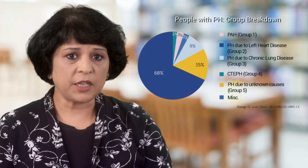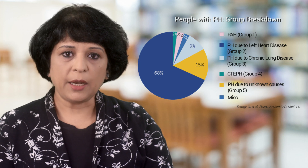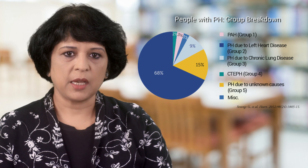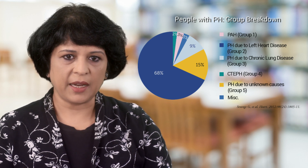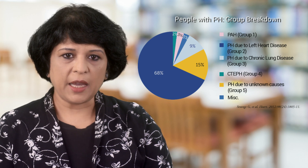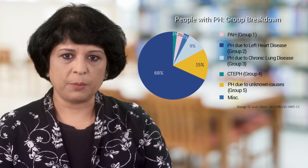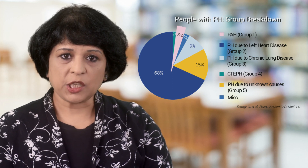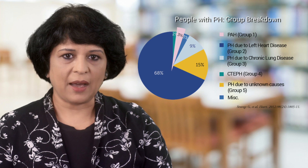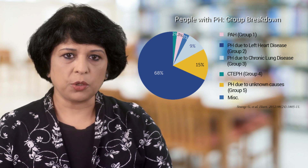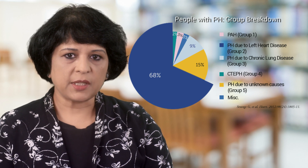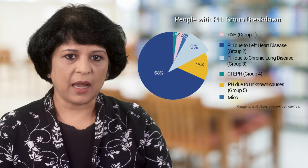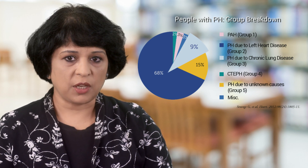There are several different conditions that lead to pulmonary hypertension. In order to put together conditions that cause PH by similar mechanisms, the World Health Organization has classified PH into 5 broad groups. PAH, or pulmonary arterial hypertension, belongs to WHO Group 1 and is rare. The majority of patients with pulmonary hypertension will have underlying left heart disease and fall into WHO Group 2. Around 10% of patients with PH fall into WHO Group 3 and have underlying lung disease, sleep apnea, or low oxygen levels.